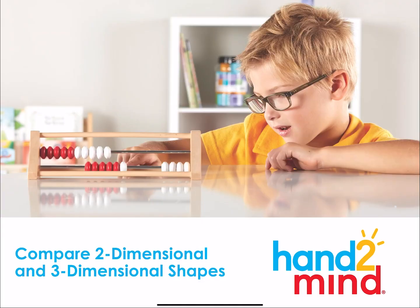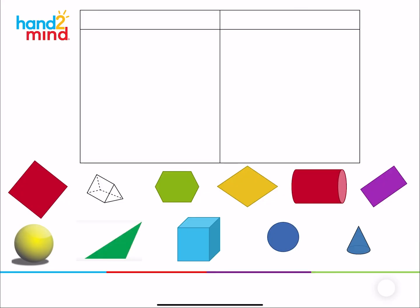Today we're going to revisit some shapes that we have talked about and put those shapes together. We're going to compare our two dimensional shapes with our three dimensional shapes. You can notice at the bottom that I have a lot of different shapes, and what I'm going to do is start sorting them. This is what I call a secret sort. I have a reason why I'm sorting them, and your job is to figure out what my secret is — why am I putting them in the places that I am?